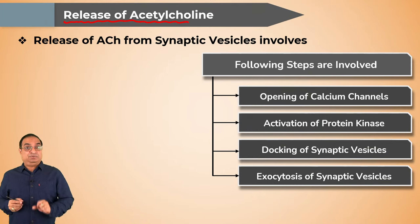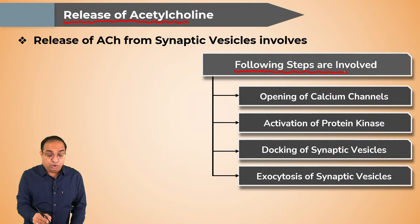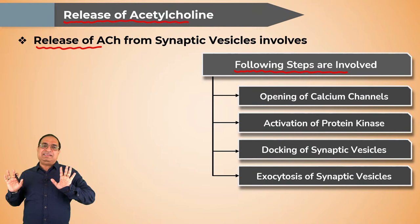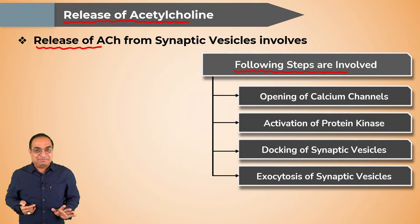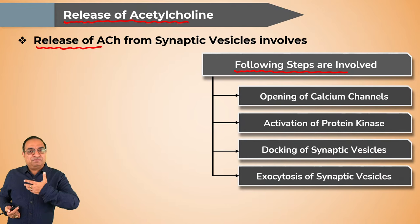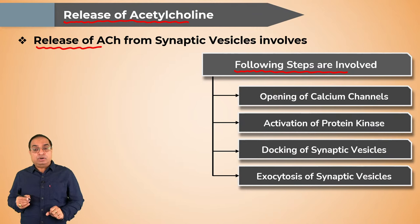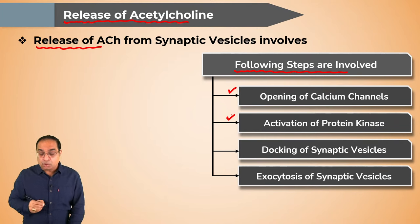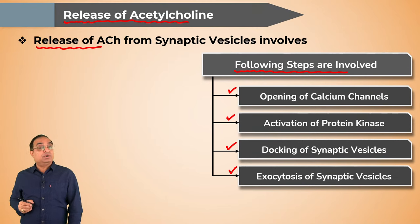Now let's see how acetylcholine is released from the synaptic vesicle. The following steps are involved: number one, opening of voltage-gated calcium channels; number two, activation of protein kinases; number three, docking of the synaptic vesicles; and number four, exocytosis of the synaptic vesicles.